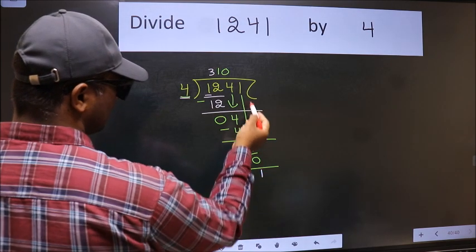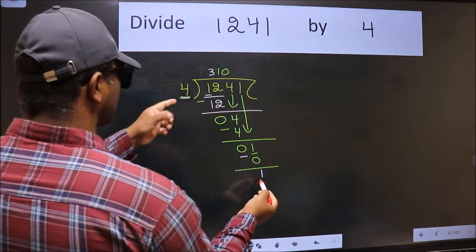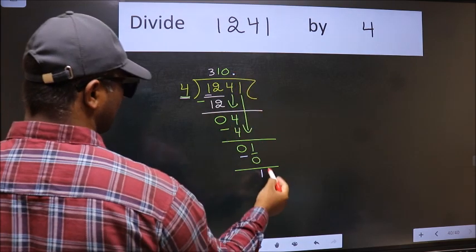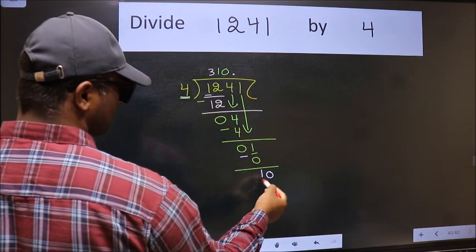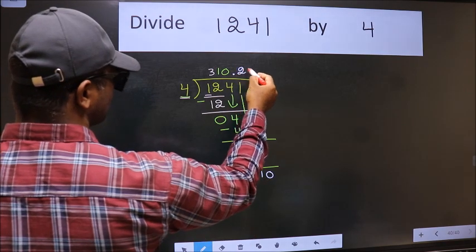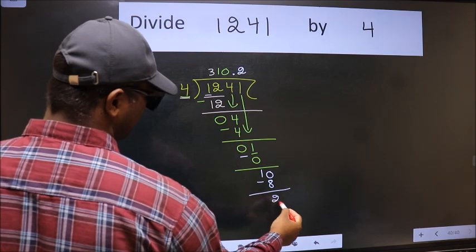Over here, we did not bring any number down, and 1 is smaller than 4. So now we can put a dot and take 0. So, 10. A number close to 10 in the 4 table is 4 twos, which is 8. Now we should subtract. We get 2.